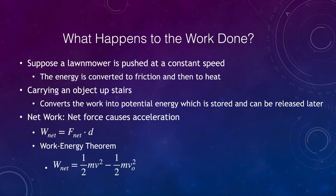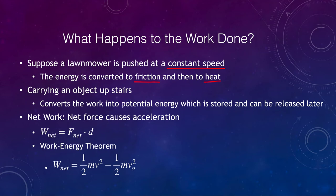Let's look at what happens to the work that is done. Going back to the lawnmower example — if we push it at constant speed, there is no net force acting on it, yet we are causing it to move. The energy is being converted to friction and then to heat, dissipated within the atmosphere, the mechanism of the lawnmower, the wheels, and friction with the ground. When carrying an object upstairs, the work is being converted into potential energy, which is a stored energy that can later be released.